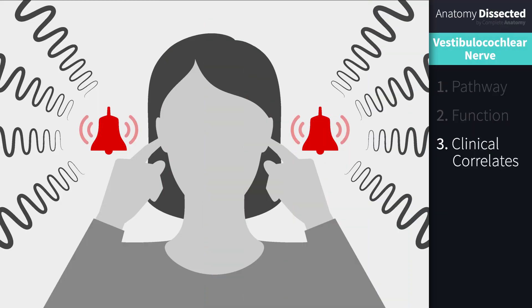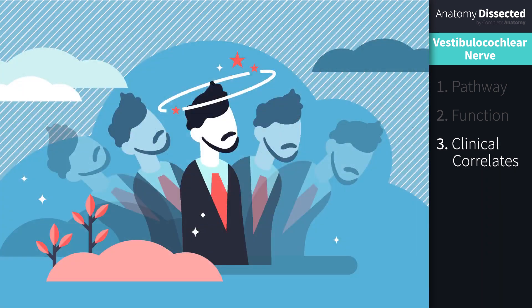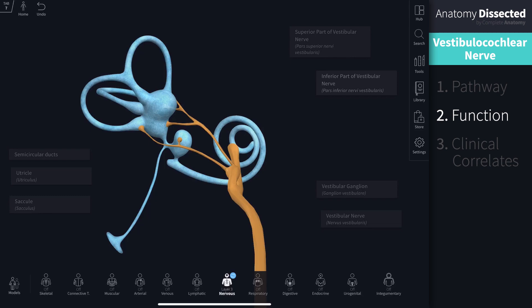Damage to the vestibulocochlear nerve often presents as hearing loss and/or vertigo. Hearing loss occurs due to damage to the cochlear part of the nerve. Tinnitus is another common complaint, presenting as a ringing, hissing, or roaring sound either unilaterally or bilaterally. Vertigo presents either subjectively, where the patient senses that he or she is moving, or objectively, where the patient feels that objects in their environment are moving. It occurs as a result of damage to the vestibular part of cranial nerve eight or damage to the vestibular apparatus.